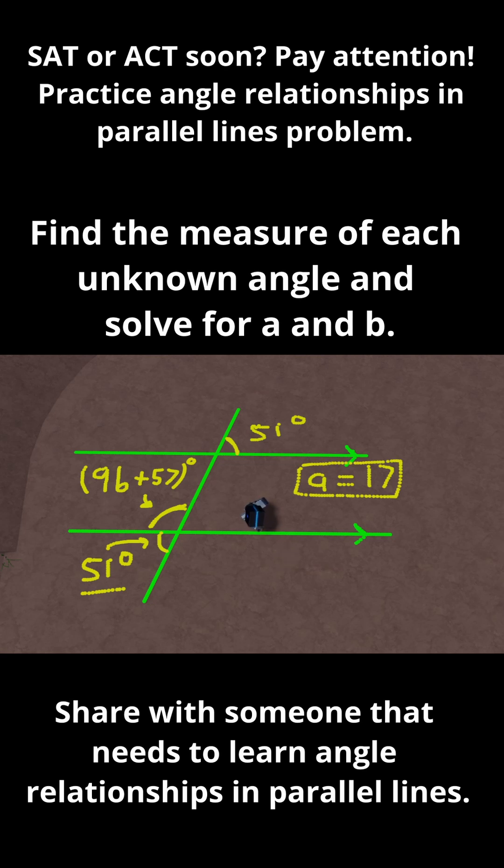Now, how can I solve for b and what 9b plus 57 is equal to? Well, I know that 9b plus 57 and 51 are supplementary angles. Therefore, I can write 9b plus 57 plus 51 is equal to 180 degrees.